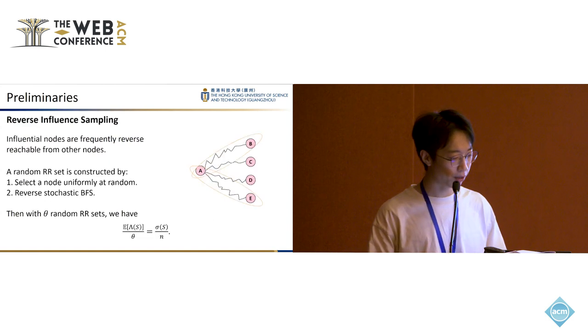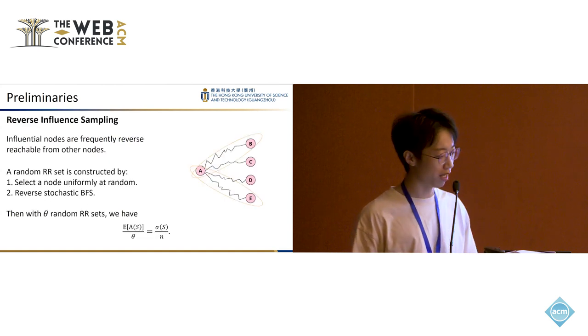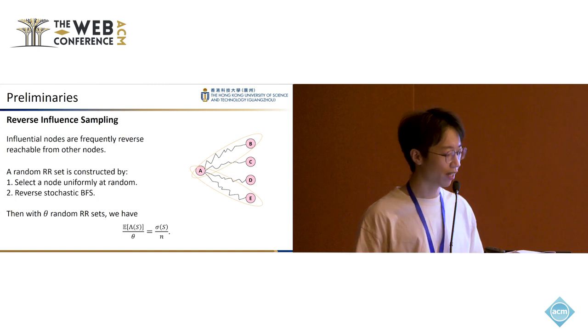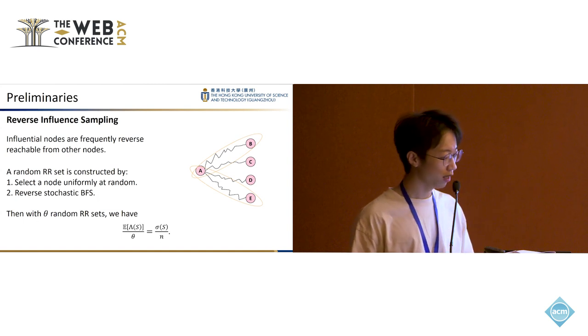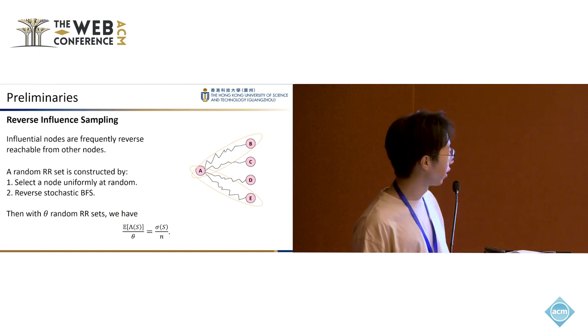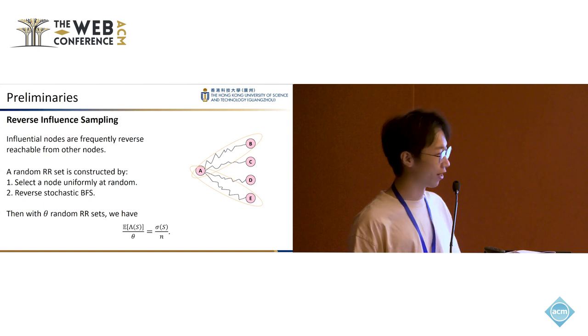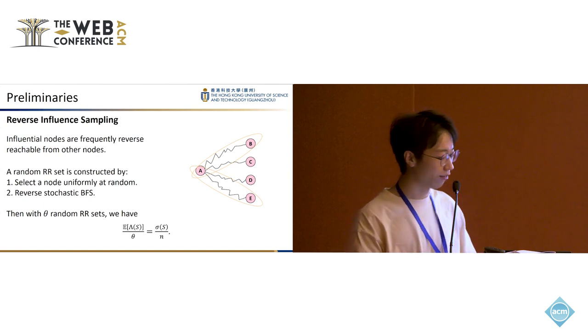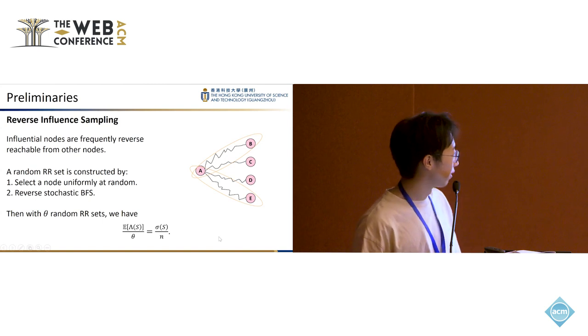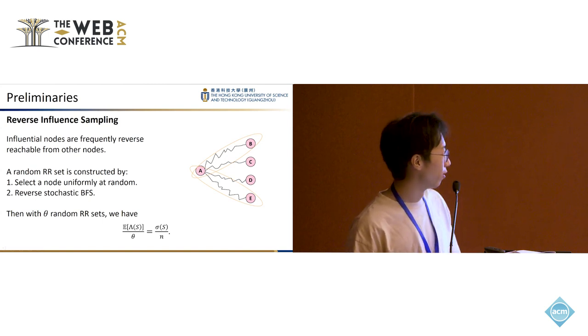So people developed a new sampling technique to accelerate the estimation of influence spread, which is called reverse influence sampling. The key idea is that influential nodes are frequently being reverse reachable from other nodes. For example, we can see the right figure here. A is very influential, right? So if we start a traverse from other nodes, like from B, from C, D, E, we will finally encounter node A.